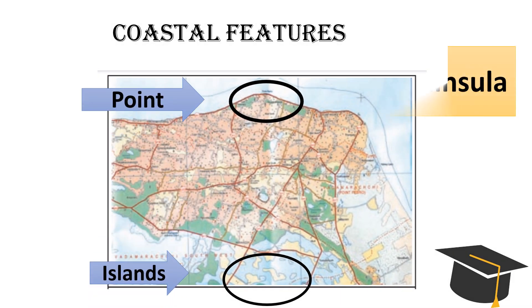Apart from contour lines, other relief features related to coastal areas are also represented in maps. This part is extracted from Point Pedro map. This is Jaffna Peninsula and here are some islands and points.